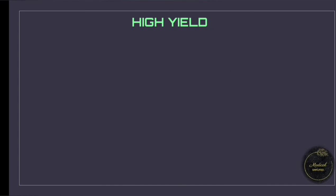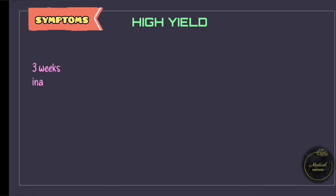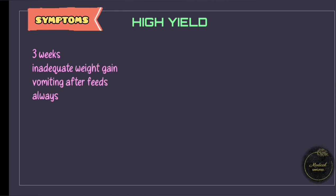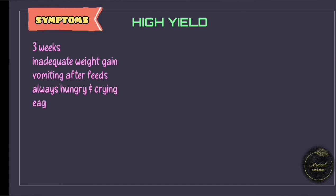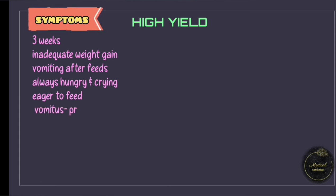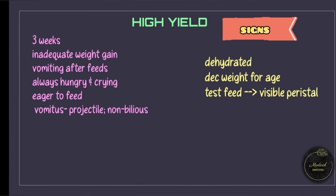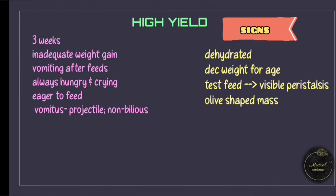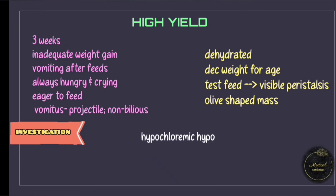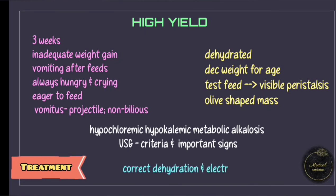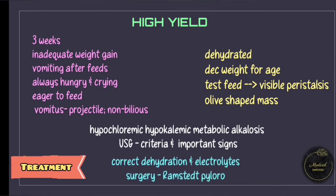To revise the important points: an infant of approximately three weeks of age, not gaining adequate weight, presents with vomiting after feeds. The mother reports the child is always hungry and crying, eager to feed, but vomits after most feeds. Vomitus may be projectile and is non-bilious. On examination, a dehydrated child with inadequate weight gain is noted. A test feed is given; visible peristalsis may be seen and an olive-shaped mass palpated. Blood gas shows hypochloremic hypokalemic metabolic alkalosis. On USG, look for the criteria and donut sign. The patient is stabilized with correction of dehydration and electrolyte abnormalities, then referred for Ramstedt pyloromyotomy.